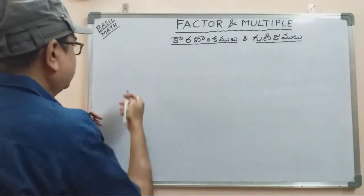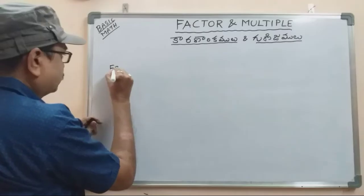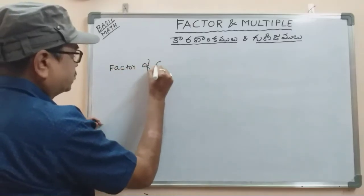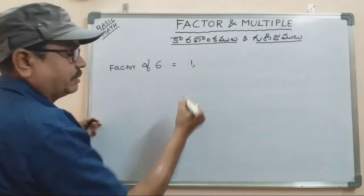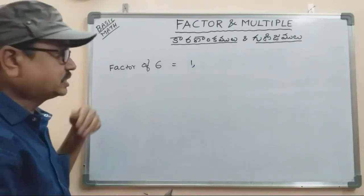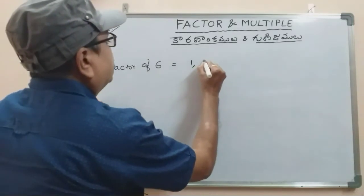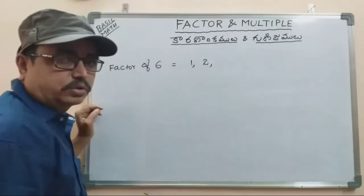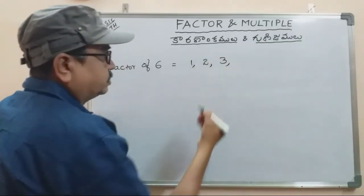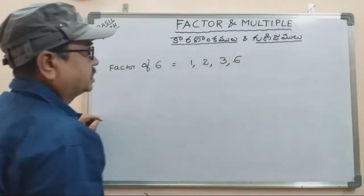Factors of 6: using the multiplication table — 1 times 6 is 6, 2 times 3 is 6, 3 times 2 is 6, 6 times 1 is 6. So the factors of 6 are 1, 2, 3, and 6.